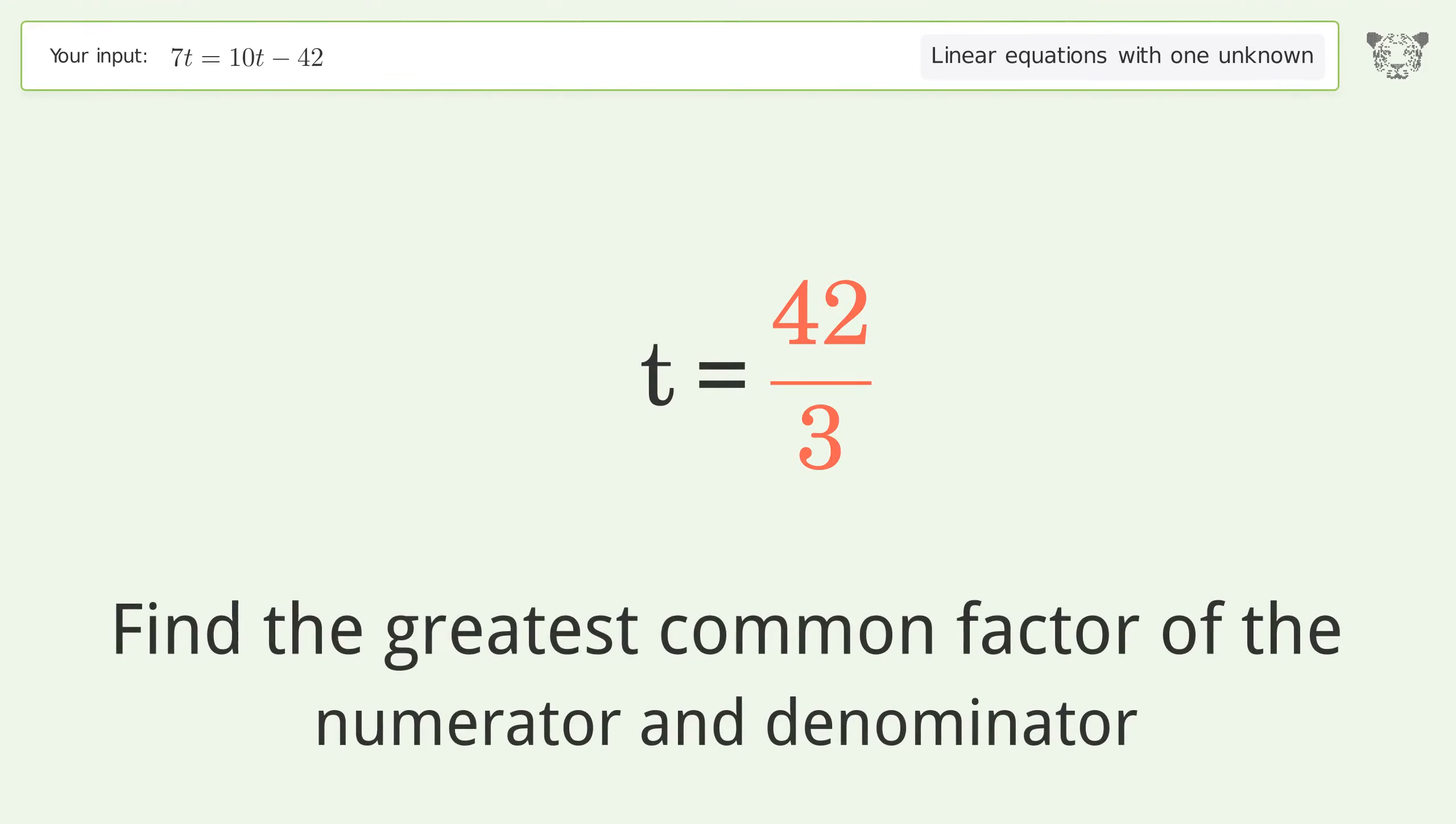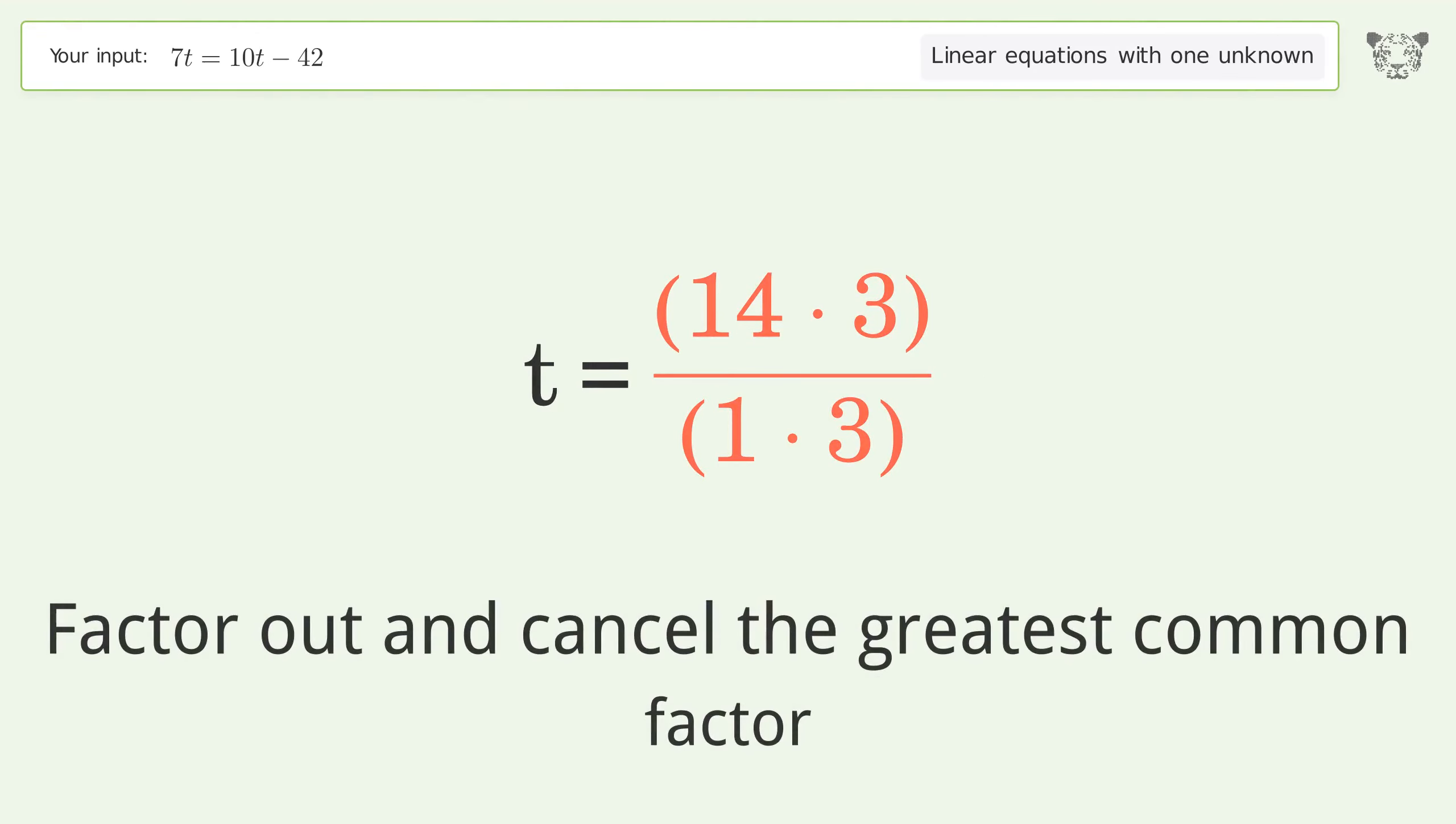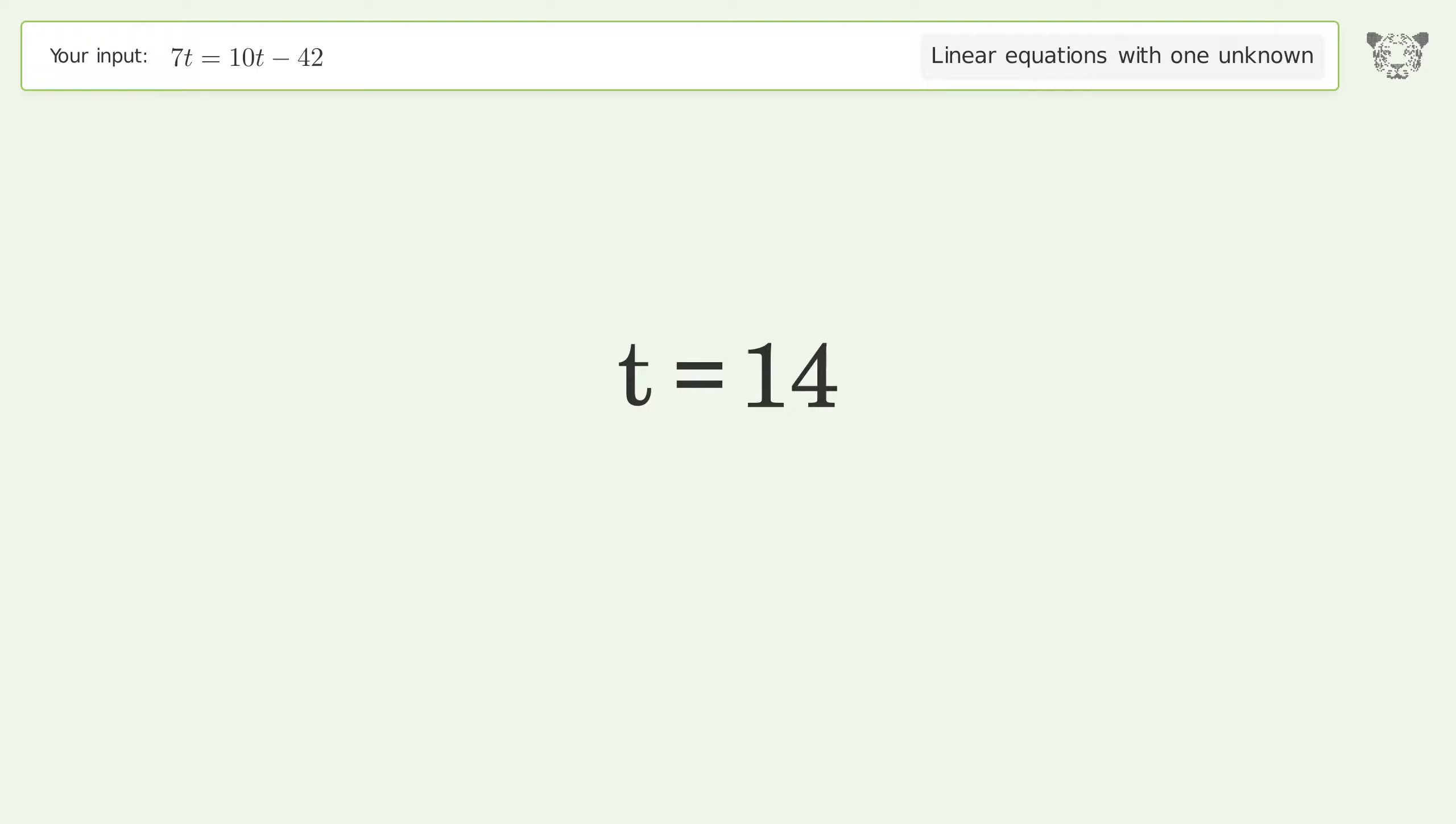Find the greatest common factor of the numerator and denominator. Factor out and cancel the greatest common factor. And so the final result is t equals 14.